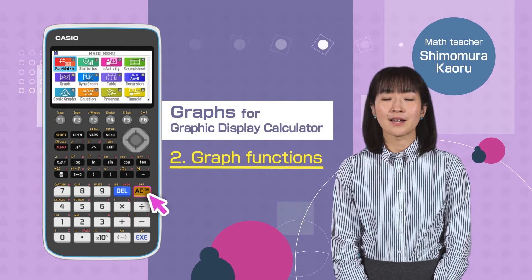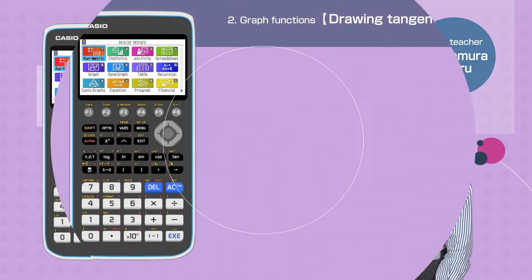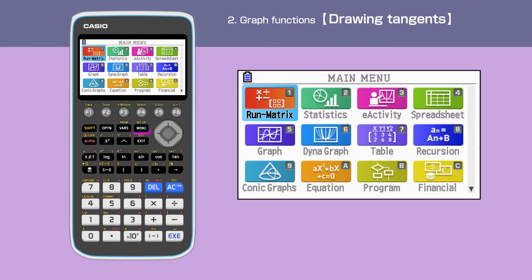Switch on your calculator, pressing AC button. Press the menu button to open the main menu, then move the cursor or press 5 to select the graph menu.